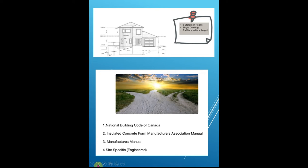Now there are four ways that an ICF design can be done. One is through the prescriptive end through the National Building Code of Canada. A relatively new manual put out by the ICF Manufacturers Association — called the Insulated Concrete Forms Manufacturers Association Manual — was put together by six manufacturers who came together to make one manual so it'll be easy for builders and inspectors to understand. Another option is the manufacturer's manual, which comes directly from the block manufacturer who has engaged an engineering firm to do their calculations. Make sure the stamping documentation is current for the year you're doing the job. The fourth option is site-specific, where an engineer does a site-specific design.